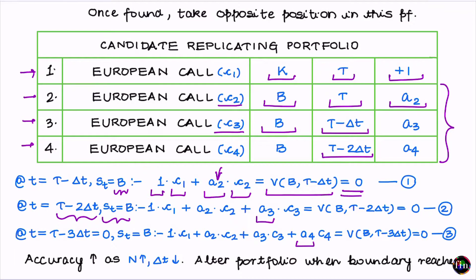The choice of three subdivisions was hypothetical — you can and should increase the number of subdivisions of the red boundary to make the static replication hedge more and more accurate. The only downside is that you'll be entering into positions in more and more European call options. This portfolio is called static because you don't need to rebalance it daily. The only time you need to touch the portfolio again is when the stock price hits the boundary — at that point, simply unwind or rebalance your static portfolio.